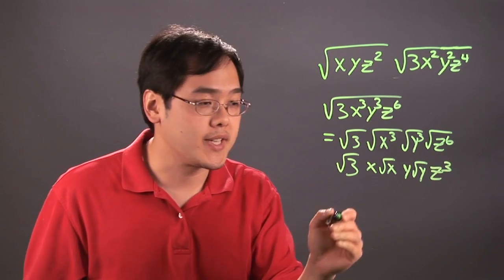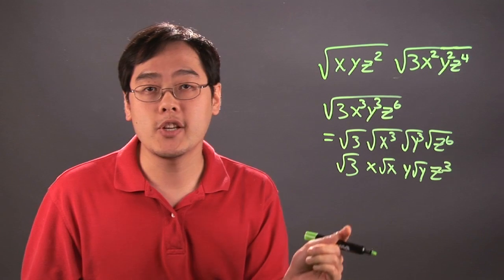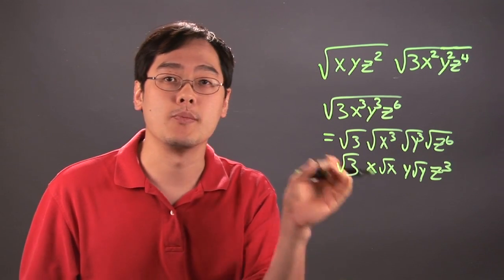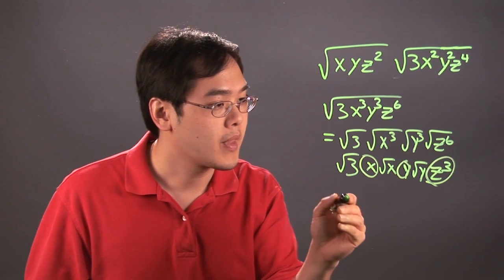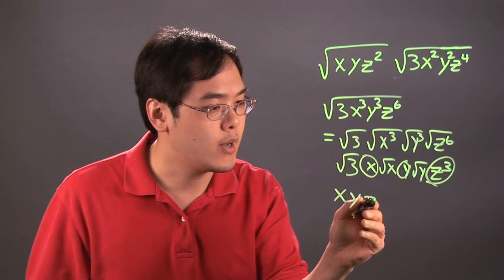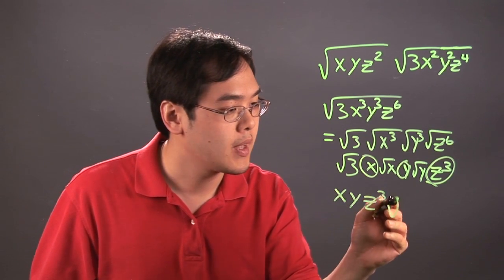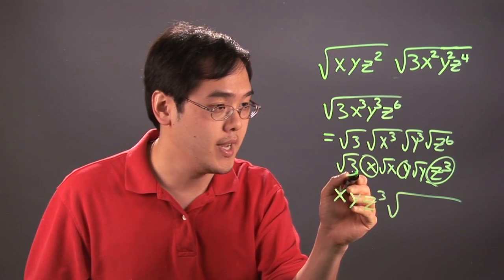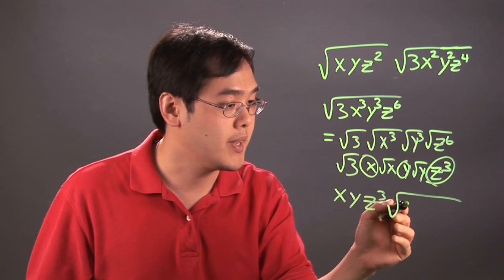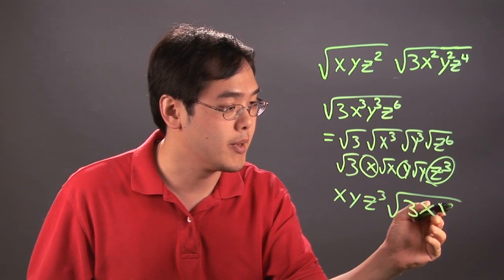When you put everything back together, the outside terms go first and the inside terms are inside the radical. Look at the x, the y, and the z³—those can be written outside the square root. What's left over can be written inside the square root: the 3, the x, and the y.